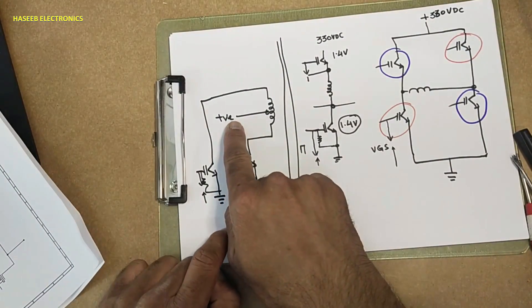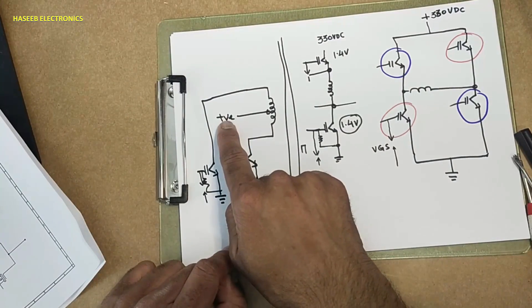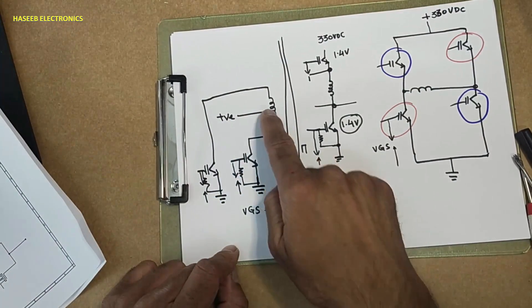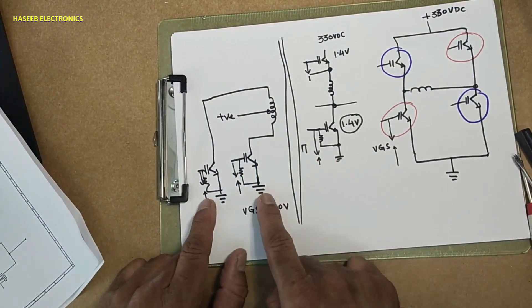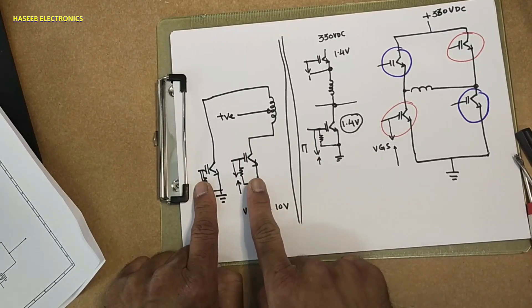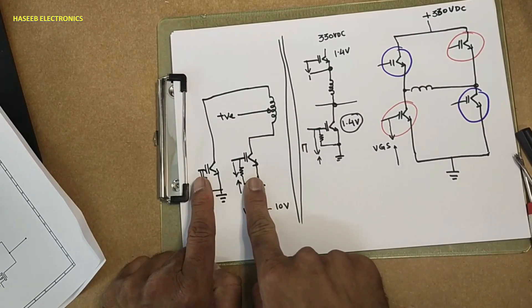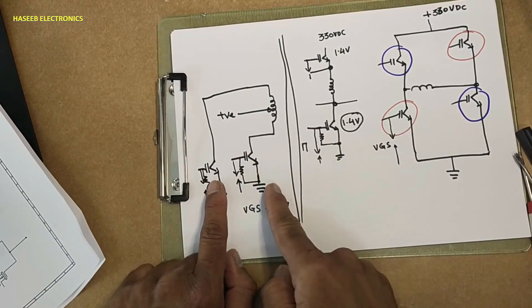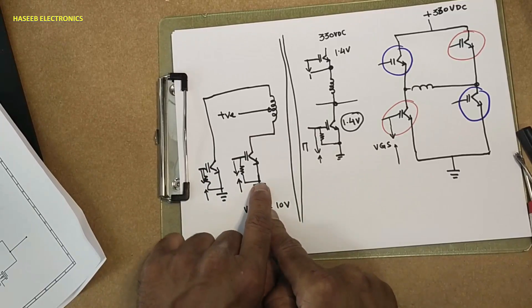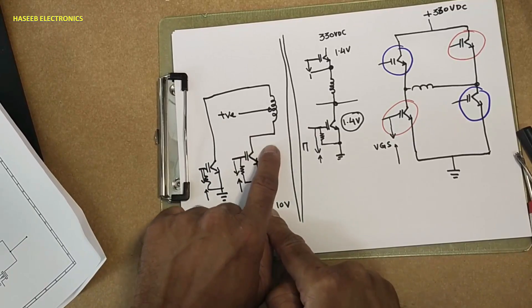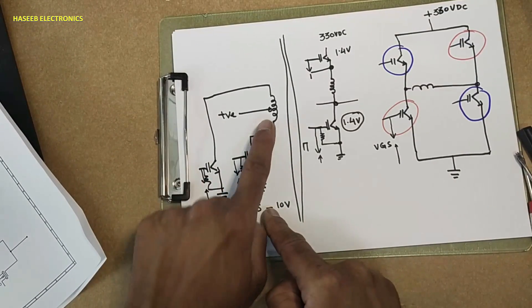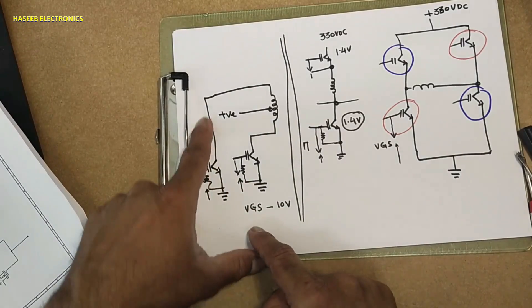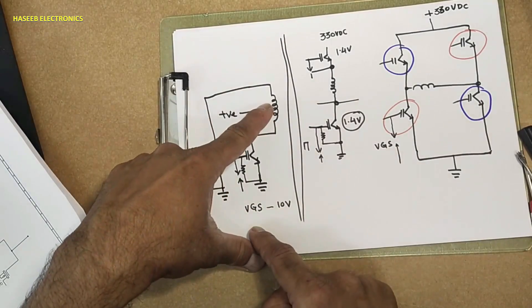When we look at a push-pull drive configuration, any load transformer is supplied with positive voltage at the center tap point. In a push-pull configuration we have two transistors which switch one by one. They switch ground potential to one end of the transformer winding, and then ground potential to the second side.